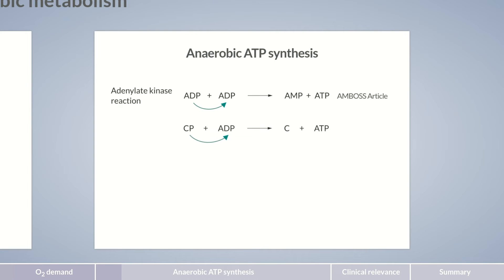Another means is the transfer of phosphate from creatine phosphate to ADP, yielding ATP and creatine. This phosphate transfer is catalyzed by mitochondrial or cytosolic creatine kinase. However, the most important source of ATP in oxygen deficiency is anaerobic glycolysis.